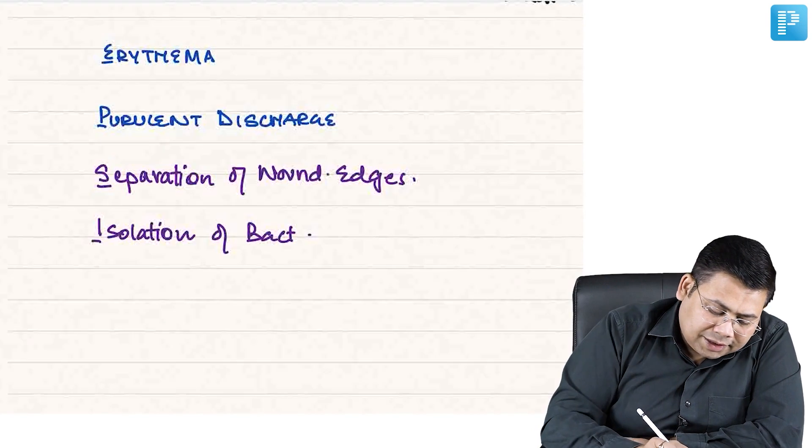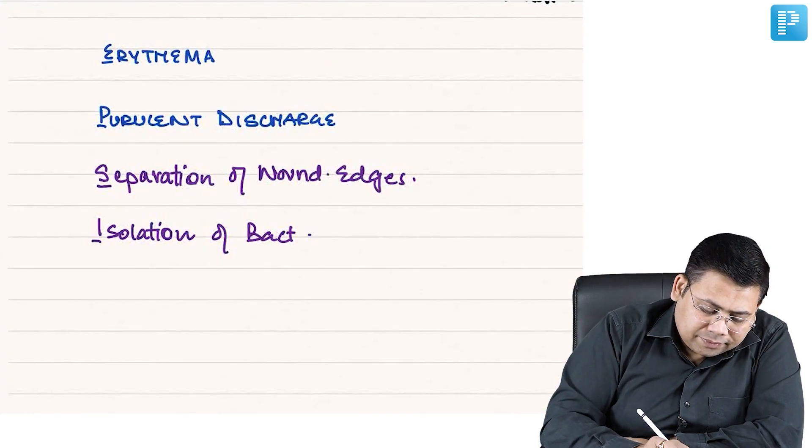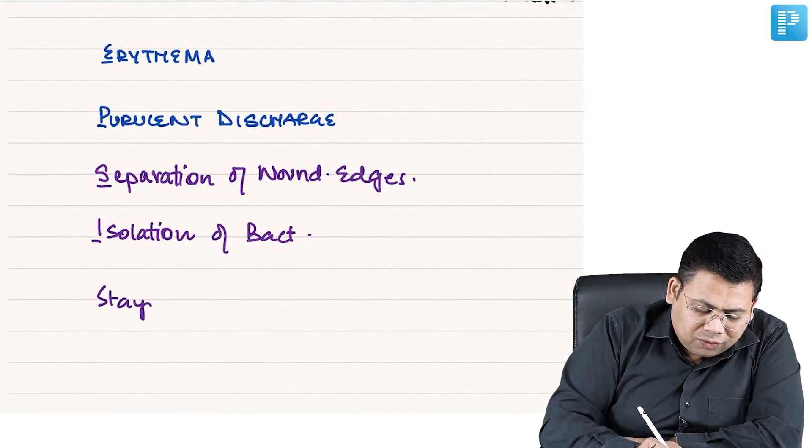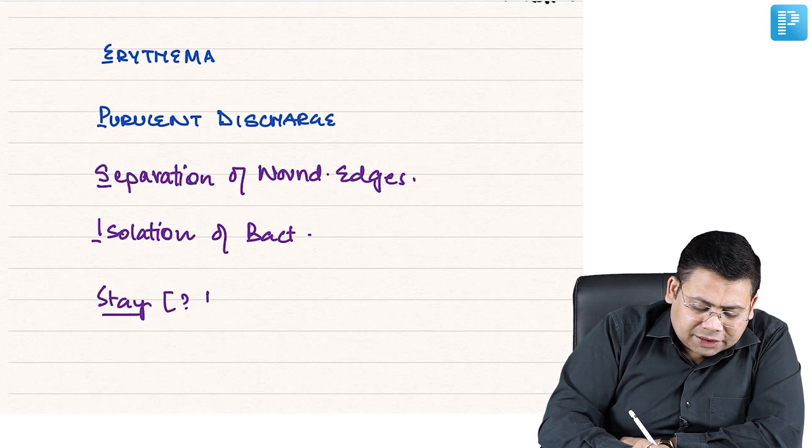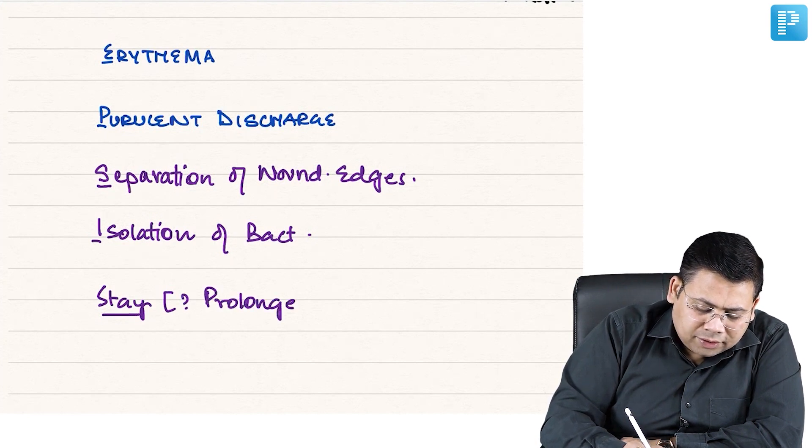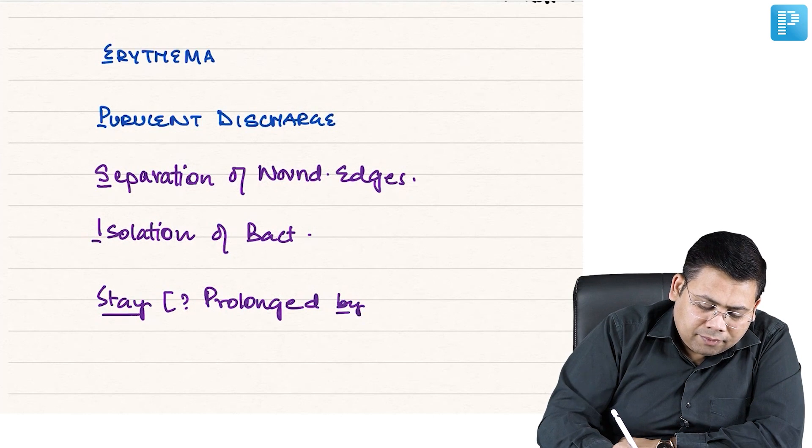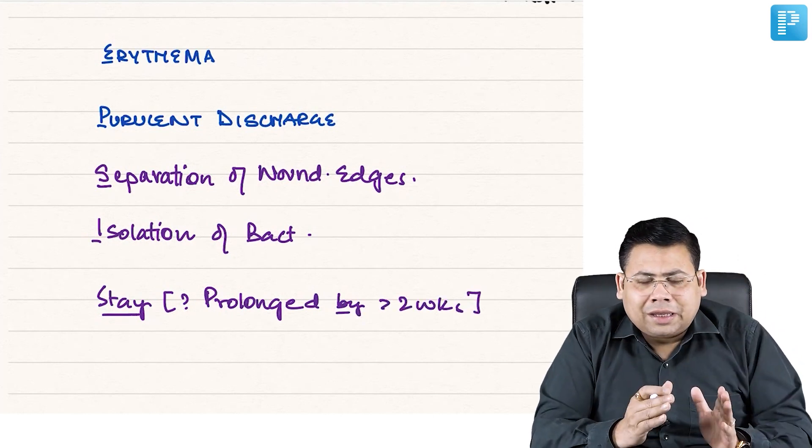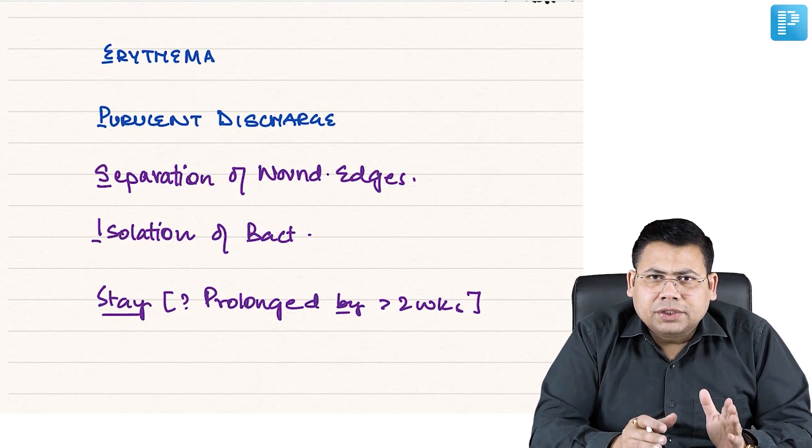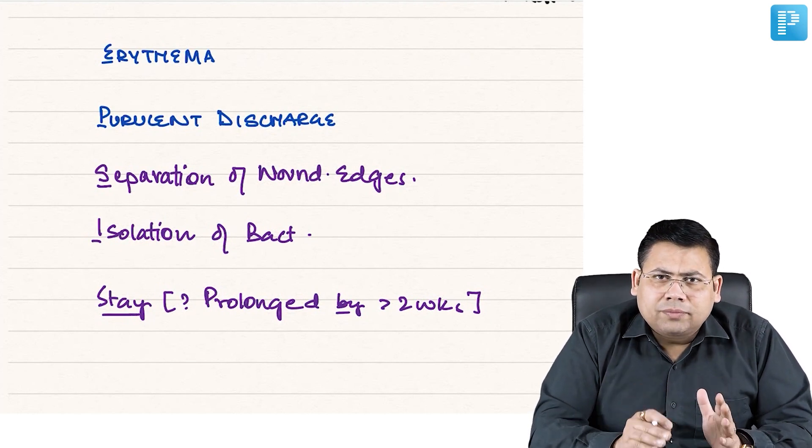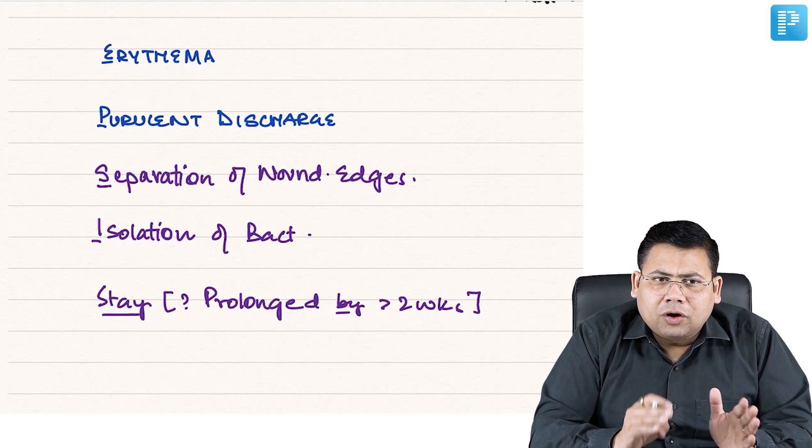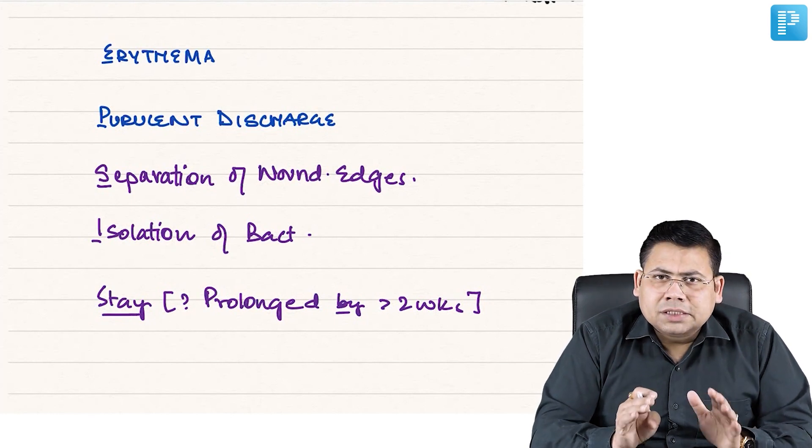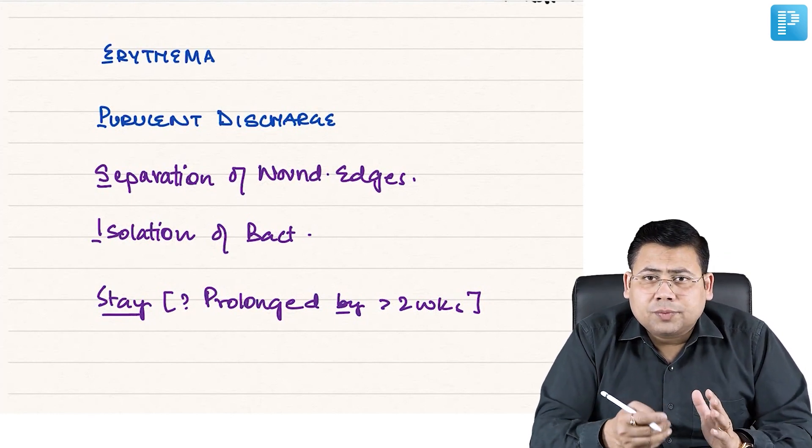Then last S is stay. Stay. What do you mean by stay? The stay is prolonged - the stay is prolonged by more than two weeks. So if for the conventional management of the patient, you had to keep the patient in the hospital for a longer time, this is what is considered as prolonged hospital stay.